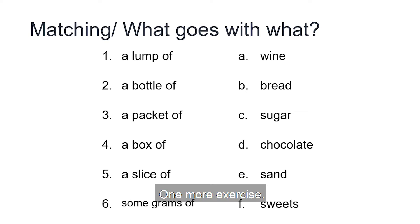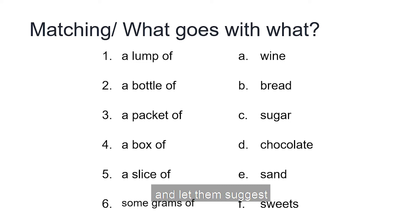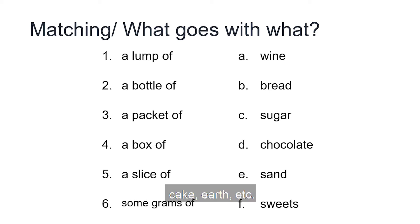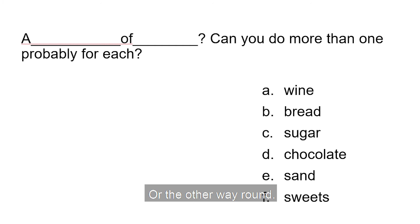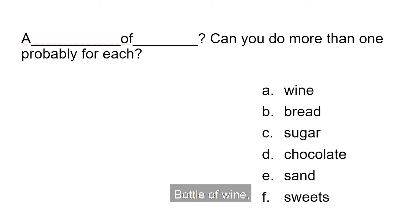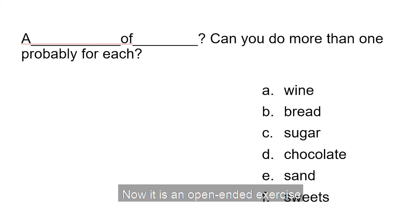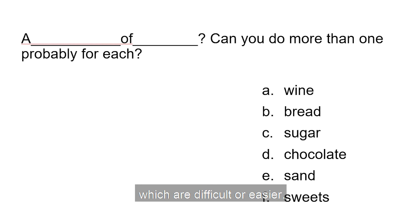One more exercise — it's a matching activity. Tell your students to put a piece of paper over one of the columns and let them suggest their own answers. For example: 'A lump of what?' — a lump of sugar, cake, earth, etc. Or the other way around: 'What can go with wine?' — a bottle of wine, a drop of wine, a taste of wine. So now it's an open-ended activity because you are allowing students to give their own answers, which can be more difficult or easier.